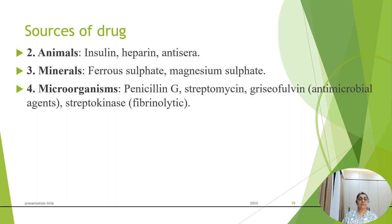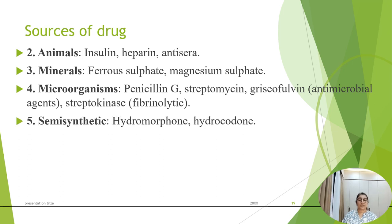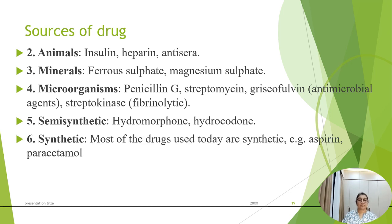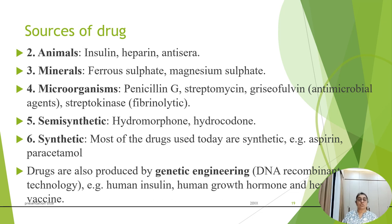From animal sources, examples include insulin, heparin, and antisera. From mineral sources, ferrous sulfate and magnesium sulfate are available. Penicillin G, streptomycin, and griseofulvin are sourced from microorganisms. Semi-synthetic drugs include hydromorphone and hydrocodone. Most drugs used today are synthetic, such as aspirin and paracetamol. Drugs are also produced by genetic engineering using DNA recombinant techniques — examples include human insulin, human growth hormone, and vaccines.